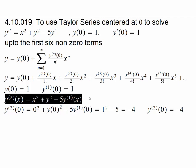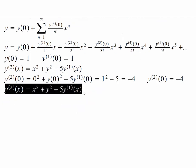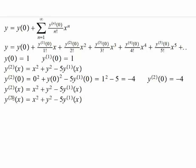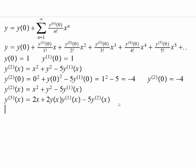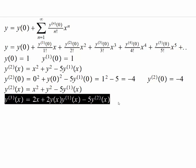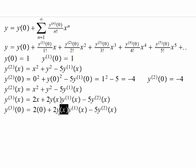For the third derivative, we differentiate the differential equation. The term 2x becomes 2, the y squared term becomes 2y times y' by the chain rule, the minus 5y' term becomes minus 5y'', and we also get terms from differentiating x squared. So we write out the differentiated equation carefully.